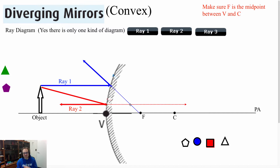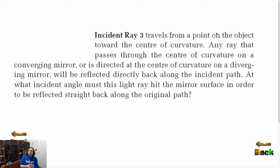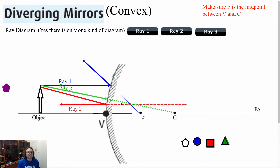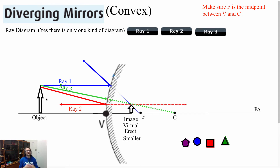That's why it's very key to have these virtual lines. My third ray, same as before, is we draw from our object to the center of the curvature. We draw to the center of the curvature, and then as soon as we hit the mirror, we just continue going, but it's going to be dotted. Where these three lines intersect, that is going to be where my image is. In this case, when we have diverging mirrors or a convex mirror, we end up most of the time with an image that is virtual, erect, and smaller.